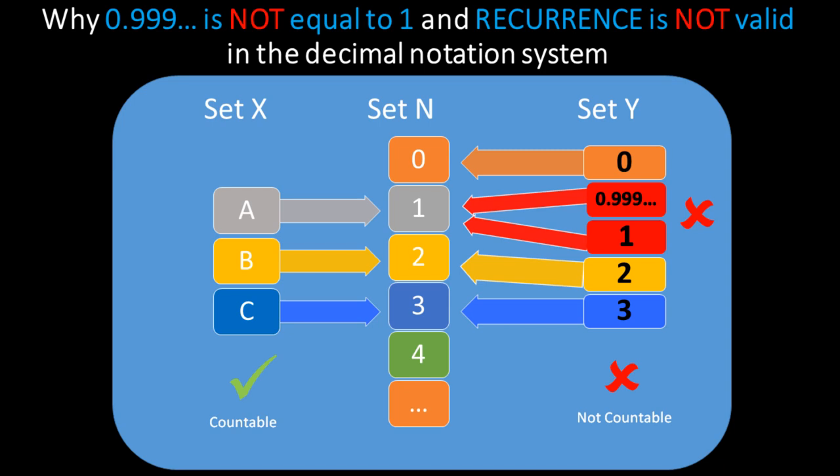And then, on the right-hand side, the set Y, which includes the point of this discussion, the number 0.999 recurring, as well as the number 1. Now, we can see that the set X has mapped the values A, B, and C to the natural numbers 1, 2, and 3, respectively. And this is consistent with an injective function, and therefore X is countable.